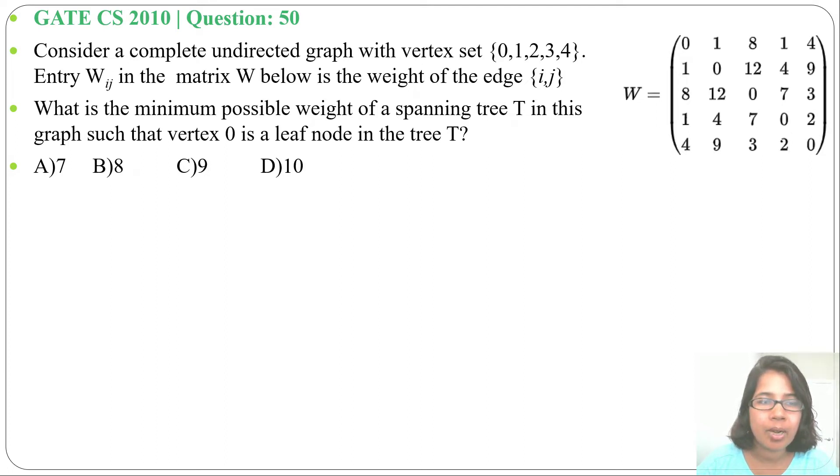Entry W_ij in the matrix W belongs to the weight of the edge ij. What is the minimum possible weight of the spanning tree T in this graph such that vertex 0 is a leaf node in the tree T?